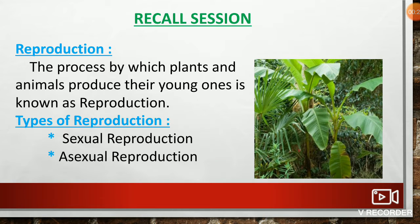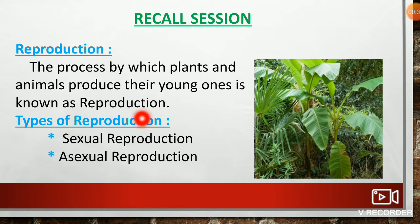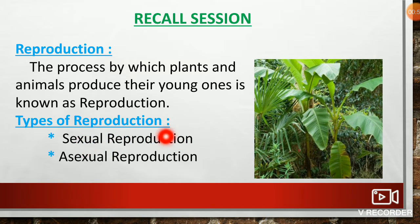Recall session: What is reproduction? The process by which plants and animals produce their young ones is known as reproduction. There are two types of reproduction: sexual reproduction and asexual reproduction.